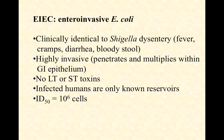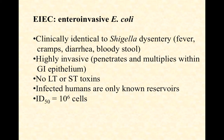Enteroinvasive E. coli, or EIEC, is highly invasive — it penetrates the gastrointestinal epithelial tissue and multiplies inside that epithelial layer. There are no enterotoxins involved, unlike ETEC. These are clinically identical to Shigella dysentery, or bacillary dysentery. It causes fever, cramps, diarrhea, and bloody stool — almost impossible to distinguish from a Shigella dysenteriae infection. The only known reservoirs for EIEC are infected humans. The ID50 value dropped 100-fold — only about 1 million cells — making these highly virulent and highly contagious organisms.